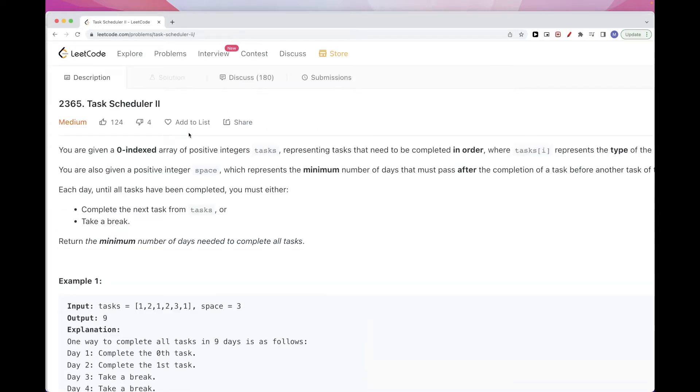Hello, hi. Today we are going to do this problem which is part of BiWeekly Contest 84 Task Scheduler 2. So what the problem says is we get a list of tasks in this array and we need to complete them in order.